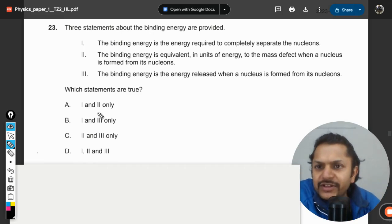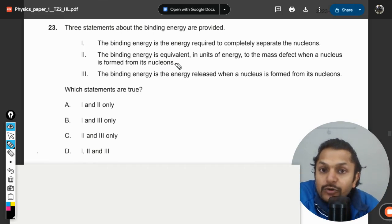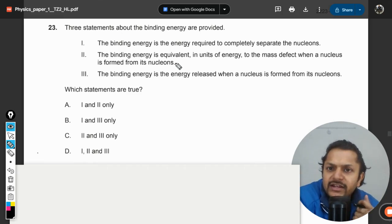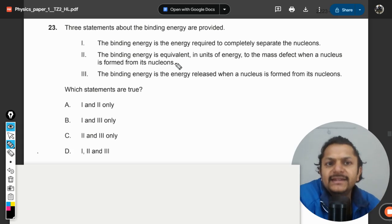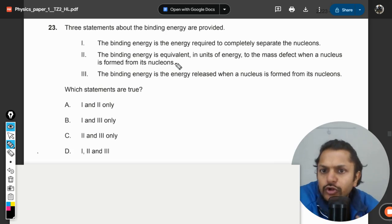Okay dear students, let us see what is there in this question. Three statements about the binding energy are provided. Number one: the binding energy is the energy required to completely separate the nucleons. Point number two: the binding energy is equivalent in units of energy to the mass defect when the nucleus is formed from its nucleons. The binding energy is energy released when the nucleus is formed.